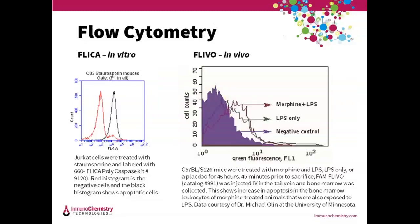Flow cytometry is a really valuable tool for researchers, and you can use it easily with FLIVO and FLICA. You can use suspension cells or trypsinize them or excise cells and run them on a flow cytometer. In the FLICA experiment on the left, Jurkat cells were treated with staurosporine then labeled with our 660 FLICA kit to detect caspase activity. Negative cells are shown in the red histogram, and apoptotic cells are shifted to the right in the black histogram. In the FLIVO data on the right, leukocytes from bone marrow from three different C57BL/6 mice treated with morphine and LPS, LPS only, or a placebo for 48 hours were analyzed. Forty-five minutes prior to sacrifice, our green FAM FLIVO was injected IV in the tail vein, and then bone marrow was collected. This shows an increase in apoptosis in bone marrow leukocytes of morphine-treated animals that were also exposed to LPS.